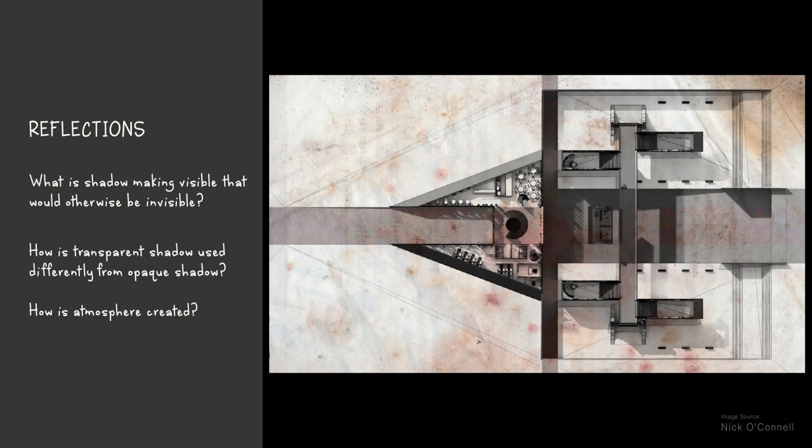In this composition by student Nick O'Connell, reflect upon how shadow makes the invisible visible, how different types of shadow are used to tell the story, and how atmosphere is created. Pause the video to give yourself time to reflect on the answer, and then begin the video once again to discuss a third composition.